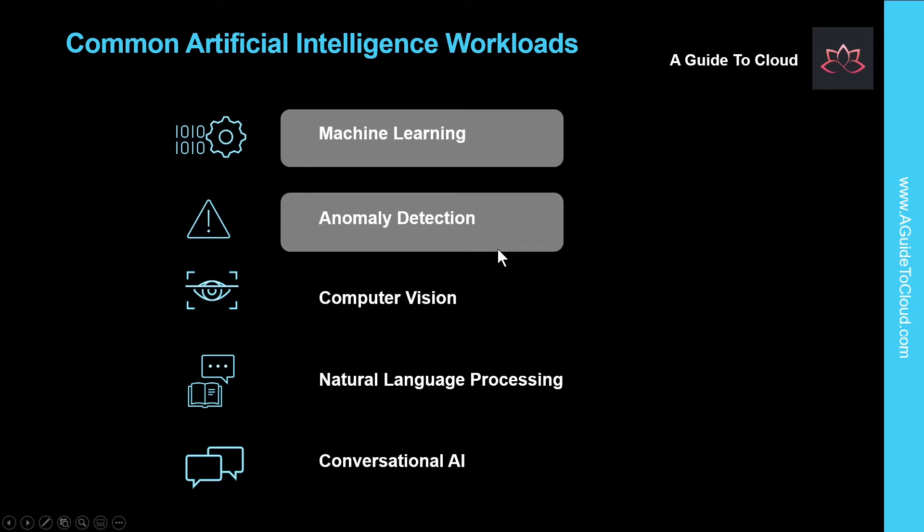What about anomaly detection? Anomaly detection is the capability to automatically detect errors or unusual activity in a system.